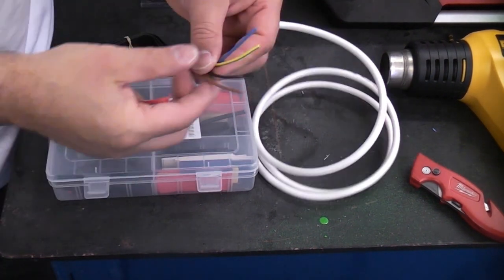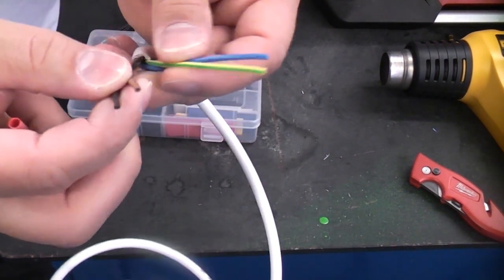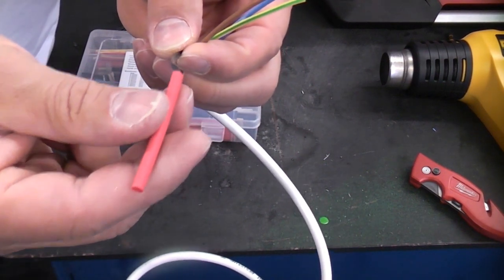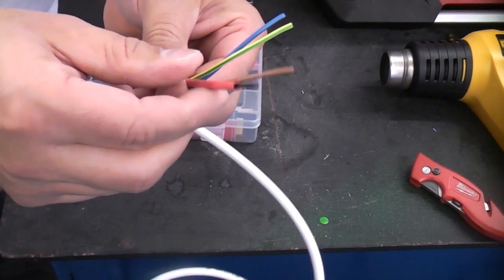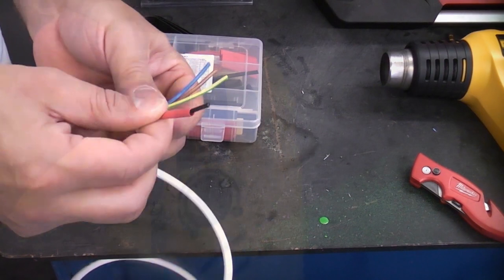It's also useful if you need to change the color of the wires. So let's say you have some flex like this and you wanted different colored wires on it. If you wanted to change the black to red, for example, you could put the sleeving over there. You could then heat that up with a heat gun and that will shrink onto the actual wire.